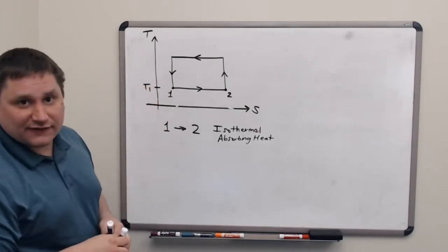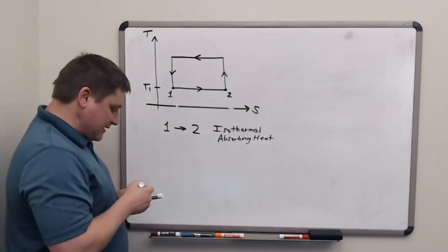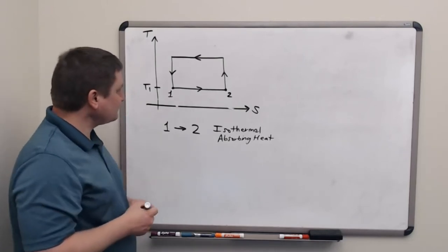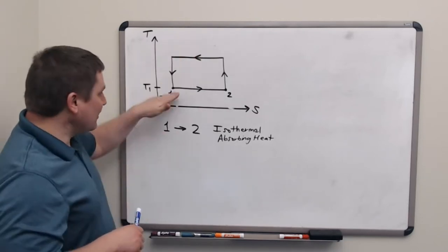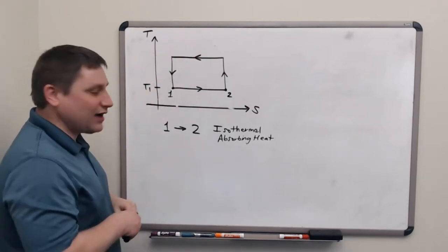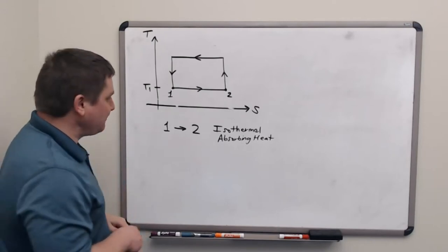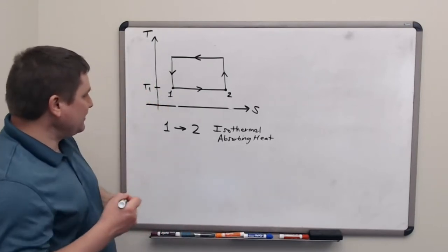I'm not going to draw a line for a reservoir on there right now because there's a little bit of ambiguity of where that line could be. Anywhere above T1 works, but I want to put it in a specific place later on. So that's what happens on 1 to 2.